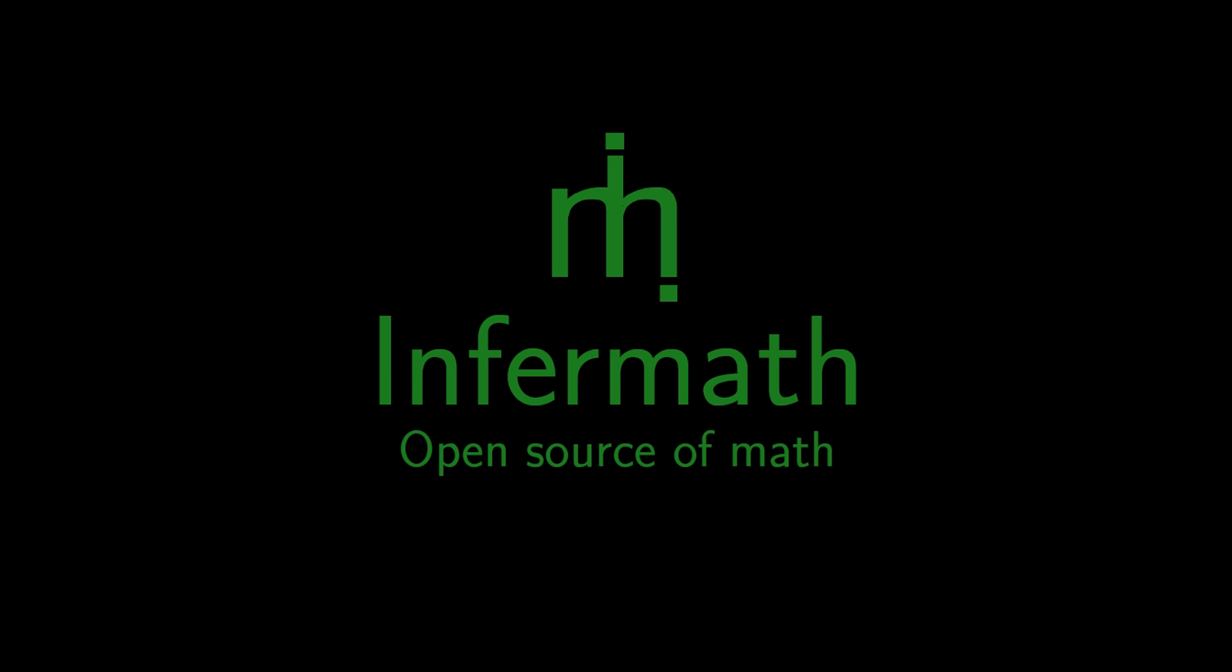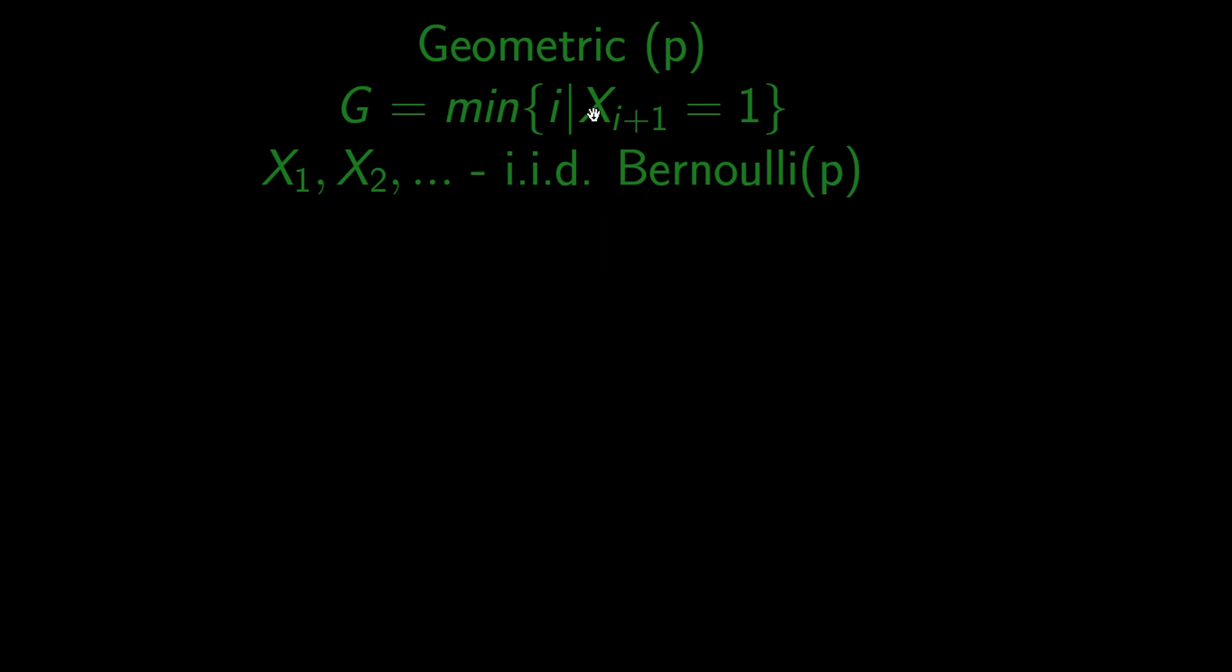Last time we defined the geometric distribution as the number of unsuccessful Bernoulli trials before we get the first successful trial.